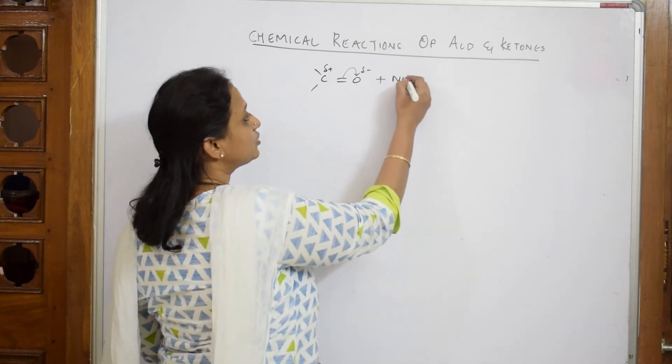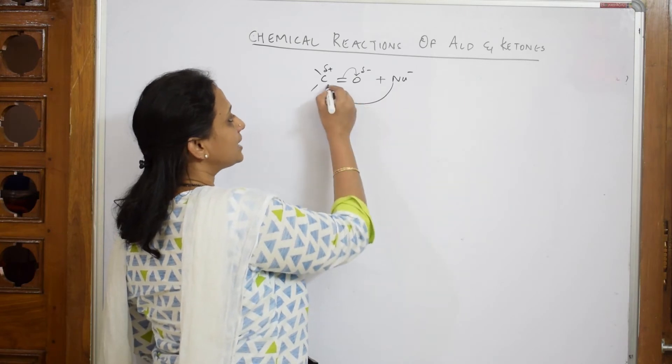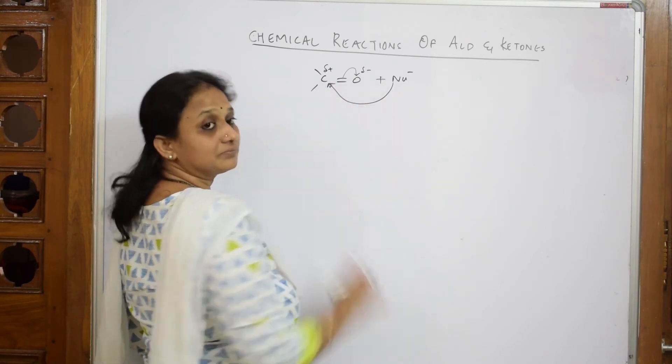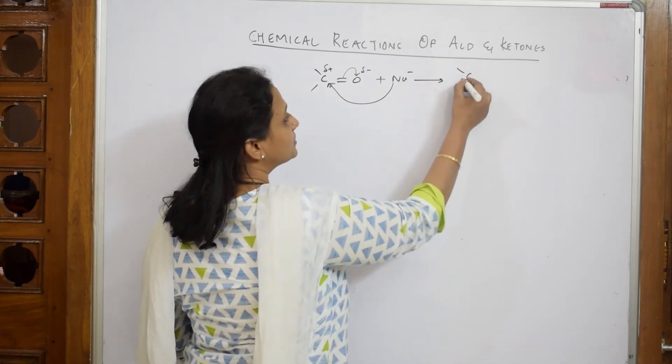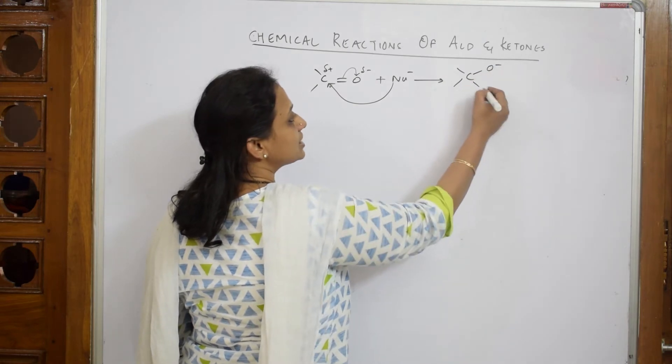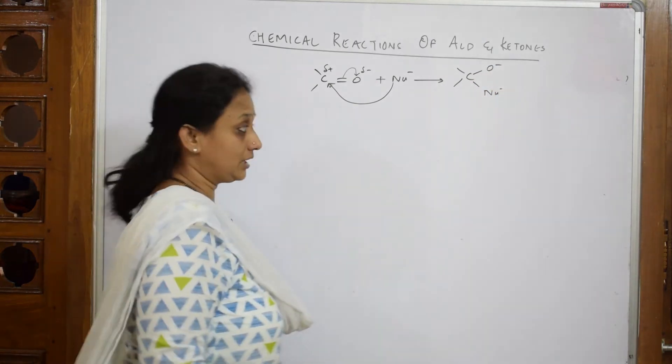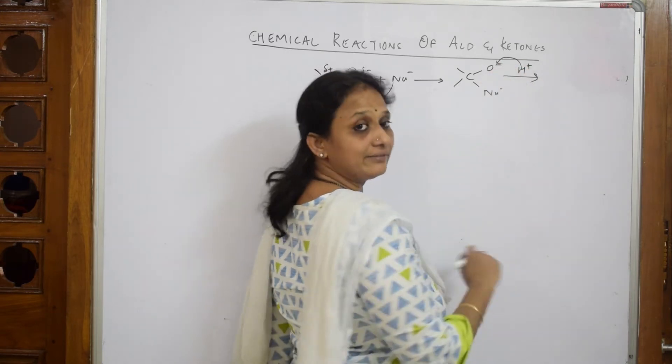Because of the positive charge, the nucleophile will attack this positive carbon. You get a carbon with four bonds - oxygen minus and the nucleophile attached.